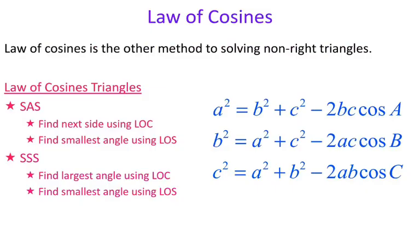So first off, what is law of cosines? Law of cosines is another method for solving non-right triangles. When we have right triangles, we can go ahead and use SOHCAHTOA — sine, cosine, and tangent ratios. When we have non-right triangles, we can either use law of cosines or law of sines.